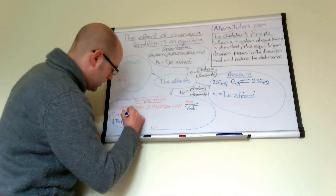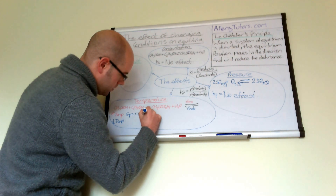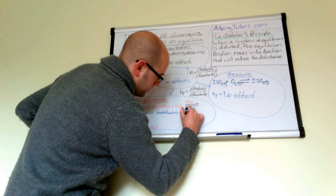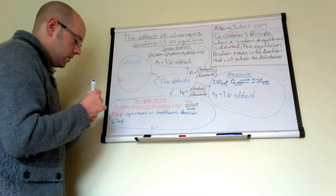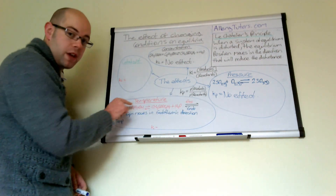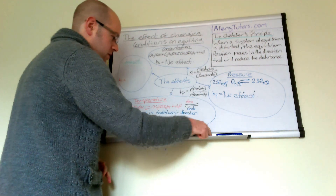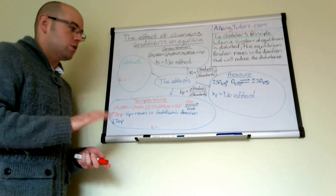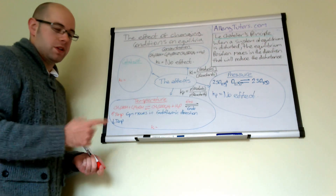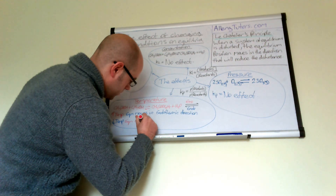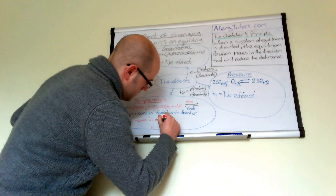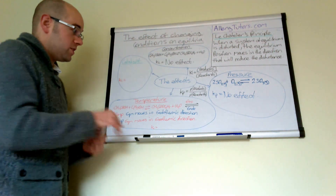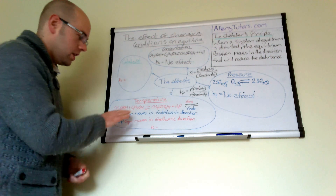So increasing the temperature causes the equilibrium to move in the endothermic direction — in this case, to the left — producing more reactants. Decreasing the temperature has the opposite effect: the reaction tries to oppose the change and warm itself back up by shifting in the exothermic direction, which here is the forward direction. So decreasing temperature shifts equilibrium to the right, and equilibrium moves in the exothermic direction.